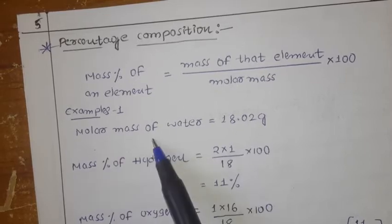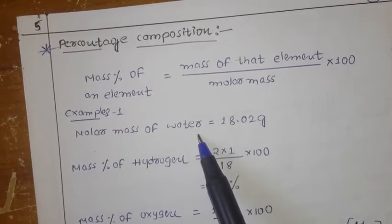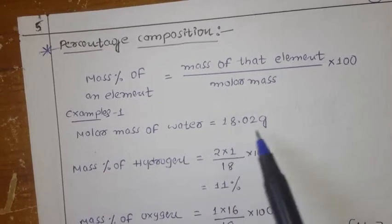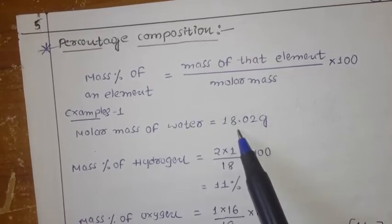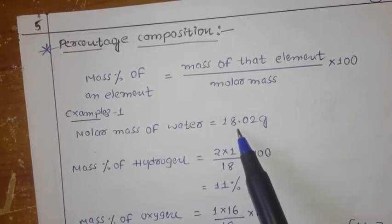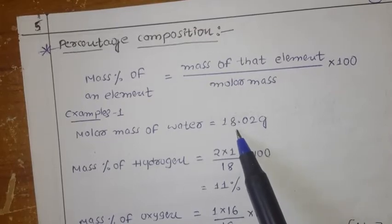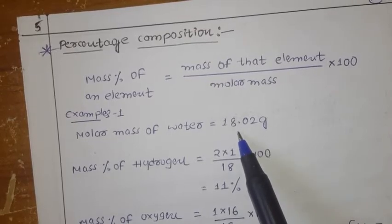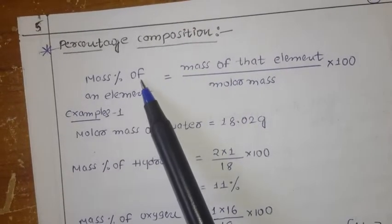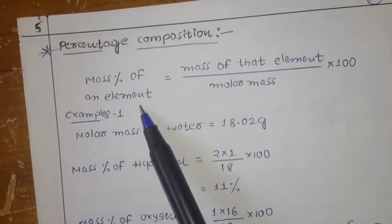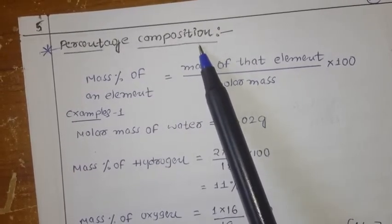The first example is the molar mass of water. The molar mass of water we already know is 18 grams. Now in this 18 grams, I want to know how much percentage of hydrogen is there and how much percentage of oxygen is there. To find that, we use the mass percentage of an element — this is the percentage composition.